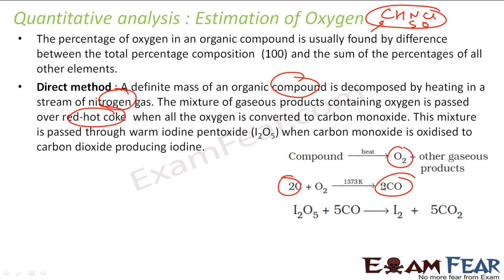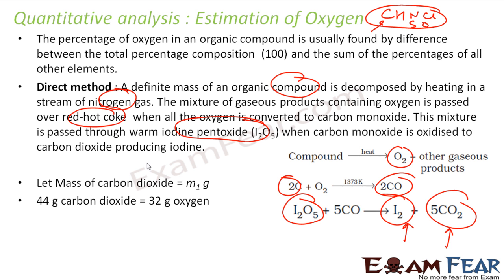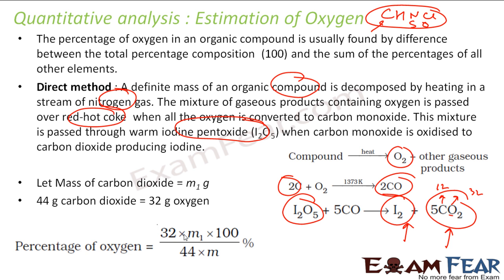Carbon monoxide is a gas and difficult to measure directly, so it is passed over iodine pentoxide (I₂O₅), which gives carbon dioxide and iodine gas. From either the iodine or carbon dioxide, you can find the concentration of oxygen. If m₁ grams of CO₂ is formed: 44 grams of CO₂ implies 32 grams of oxygen, since CO₂ = 12 (carbon) + 32 (oxygen). So the percentage of oxygen = (32/44) × (m₁/m) × 100, where m₁ is the mass of CO₂ and m is the mass of the organic compound.